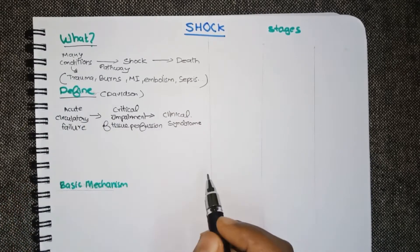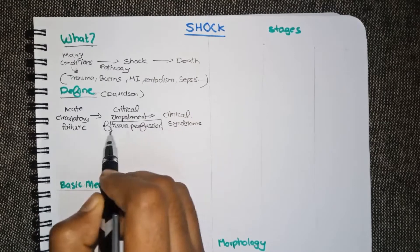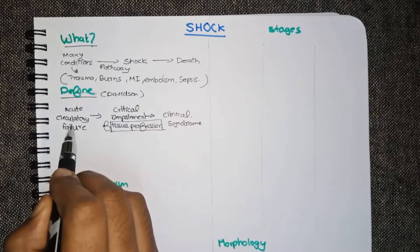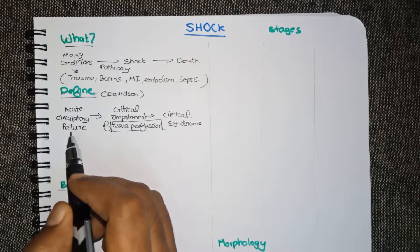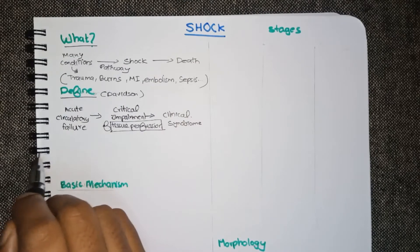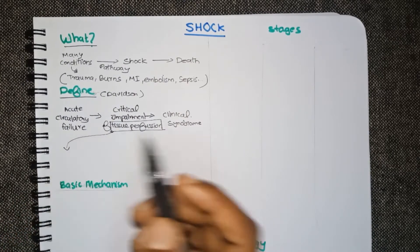When there is some form of acute circulatory failure that results in the impairment of tissue perfusion, it results in a lot of clinical features or clinical syndrome and that is called shock.